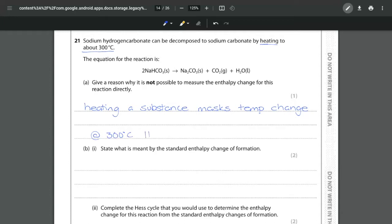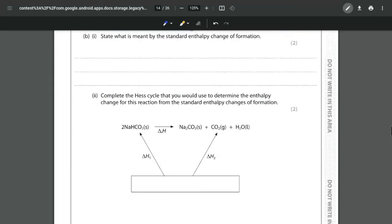Alternatively, you can also look at it from another way and say that at 300 degrees Celsius, water is in the gas phase or as gaseous, not liquid. What we want here is liquid, and that is going to have an effect on your overall enthalpy change. So either heating the substance masks your temperature change, or the water is going to be a gas not a liquid at 300 degrees.